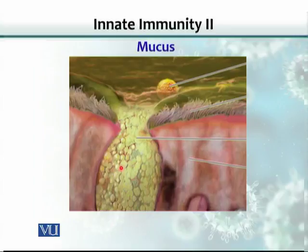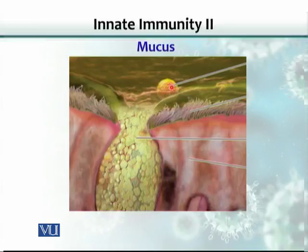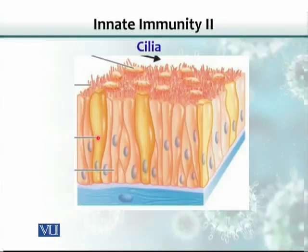This is a photo of a goblet cell present in the epithelial lining of the respiratory system. The goblet cell secretes mucus — small granules turn into mucus, which spreads over the lining and traps organisms. These cilia — hair-like projections — beat unidirectionally upward, propelling organisms until they reach the larynx and pharyngeal area, where we can cough them out. The mucus traps organisms and the cilia propel them out.